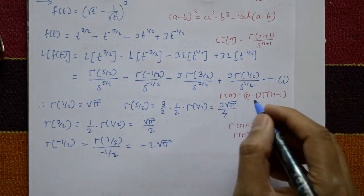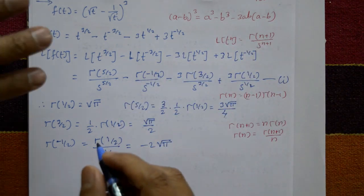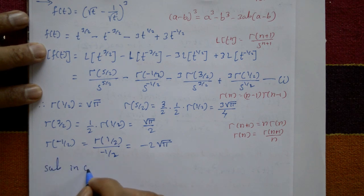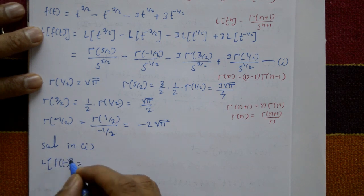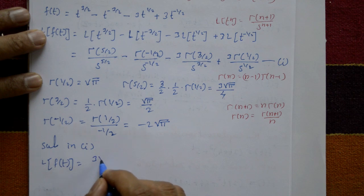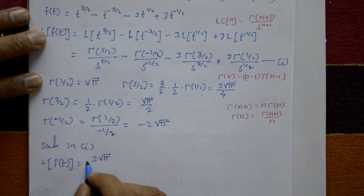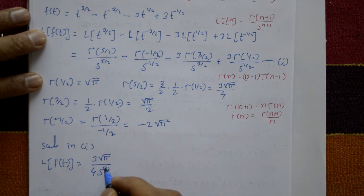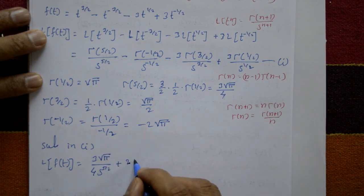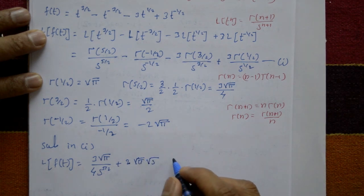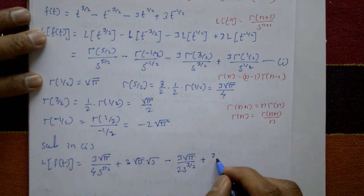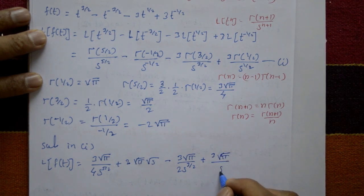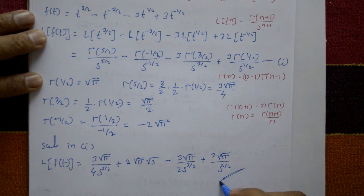Substituting all values into equation (1), the Laplace transform of f(t) is: L{f(t)} = (3√π/4) / s^(5/2) + (2√π) / √s - (3√π/2) / s^(3/2) + 3√π / s^(1/2). This is the required solution.